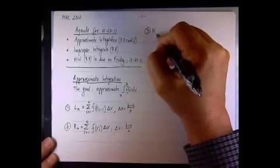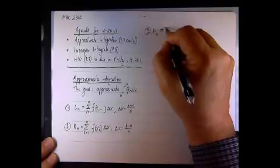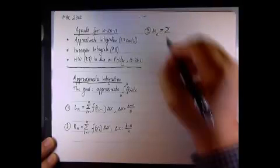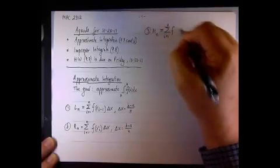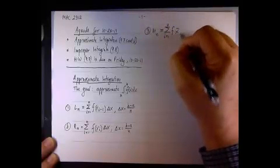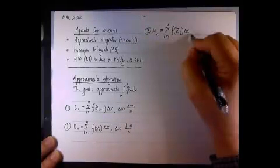The next technique, number three, was the midpoint. So M sub n, the midpoint. We approximate the integral by taking the sum from 1 to n of f of x-bar sub i, where x-bar sub i is the average value.